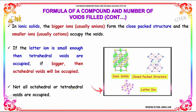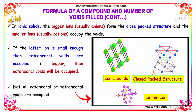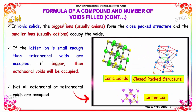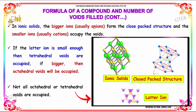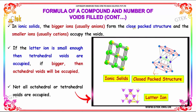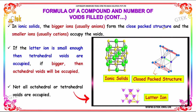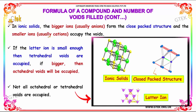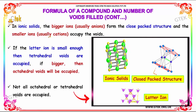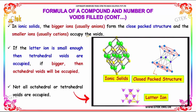In ionic solids, the bigger ions — usually anions — form the close-packed structure, and the smaller ions — usually cations — occupy the voids.